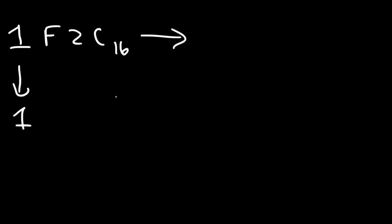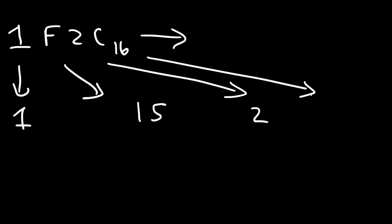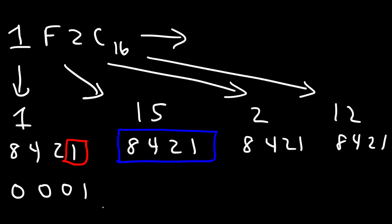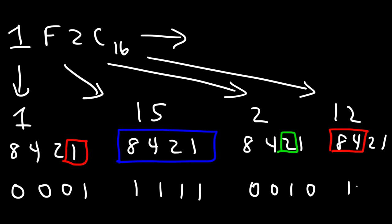Now let's try another one: 1F2C. F corresponds to 15, C — since A is 10, B is 11, C is 12. Using 8, 4, 2, 1: the 1 becomes 0, 0, 0, 1 in binary. 15 is the sum of all four, so that's 1, 1, 1, 1. For 2, we only need that number, so it's 0, 0, 1, 0. And for 12, that's simply 8 plus 4, so that's 1, 1, 0, 0.